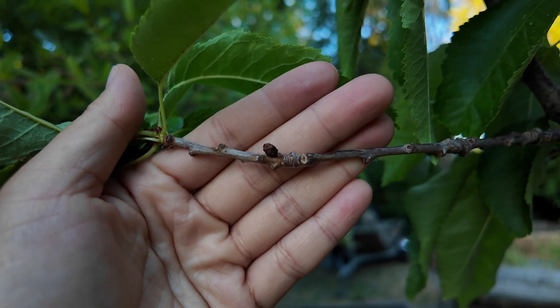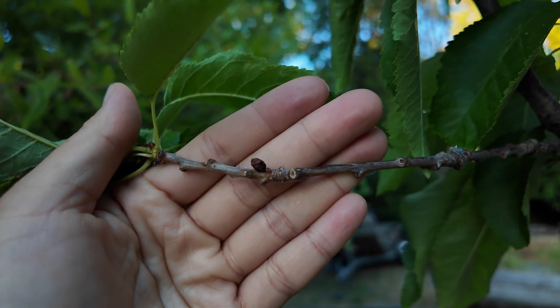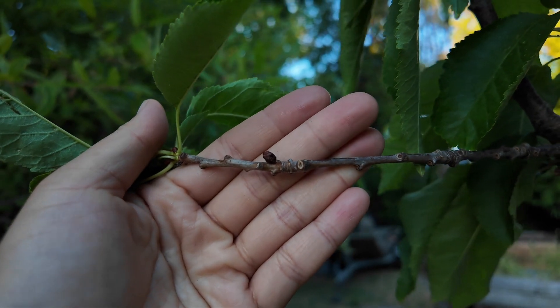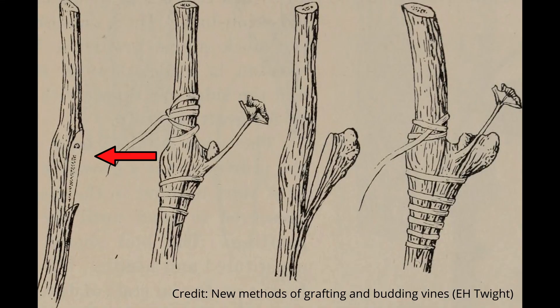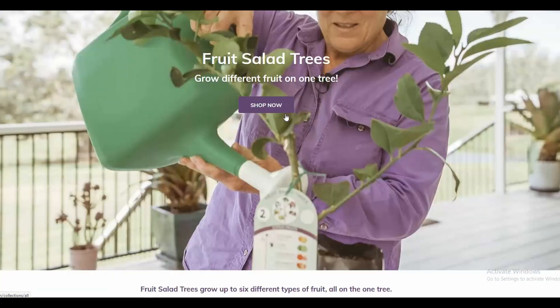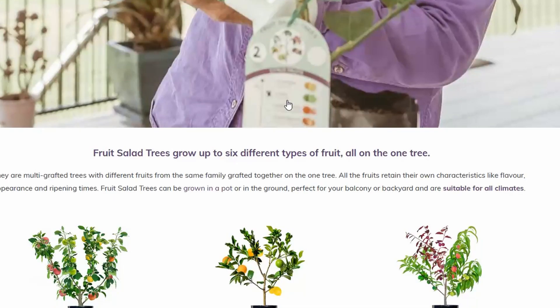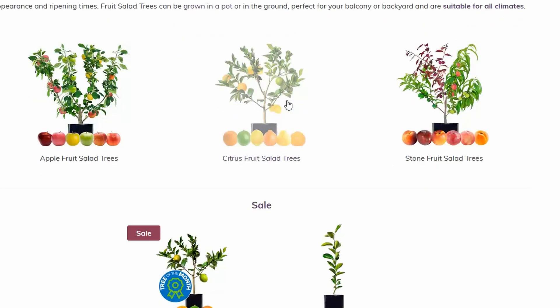There's another method called budding, where you can take the bud off of the tree that you want, cut a slit into the stem of another tree, and insert the bud. If you're successful with either method, you can end up with branches of different trees on one stem. This is how you can create what's called a fruit salad tree. Of course, those plants have to be relatively similar and compatible.